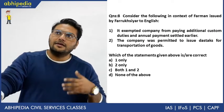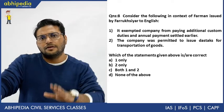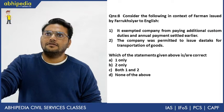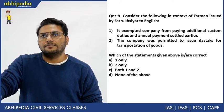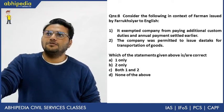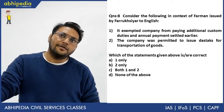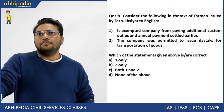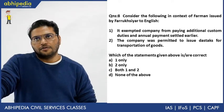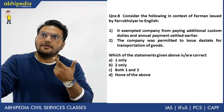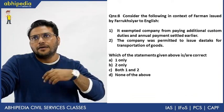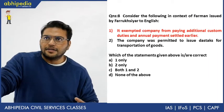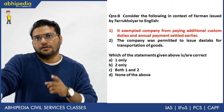Next question: consider the following statements in context of the Farman issued. Statement 1: it exempted the company from paying additional custom duties and annual payments settled earlier. Statement 2: the company was permitted to issue dastak for transportation of boats. The first statement is partially wrong — the company was exempted from additional customs duties, but annual payments settled earlier were still paid.